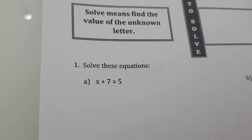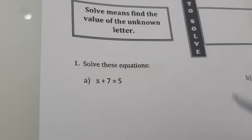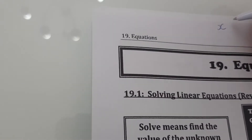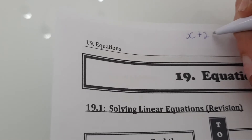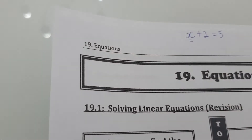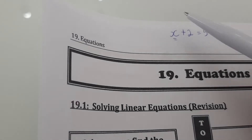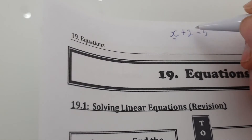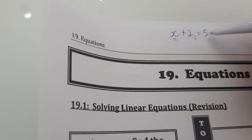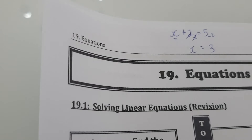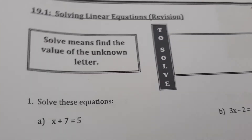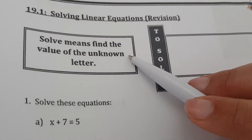If I say I have a number, and when I add two to this number the value is five, what was the number? I had a number in mind — let's call it x. When I added two to it, the result is five. So x plus two equals five. Three plus two gives five, so x is three.